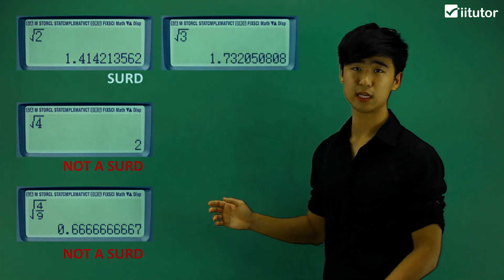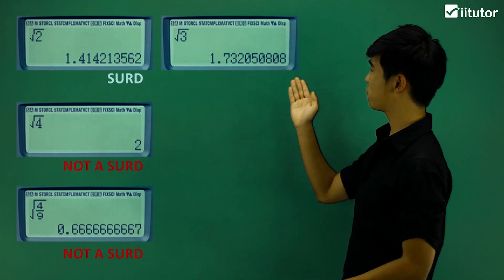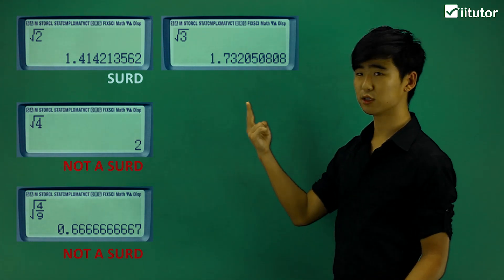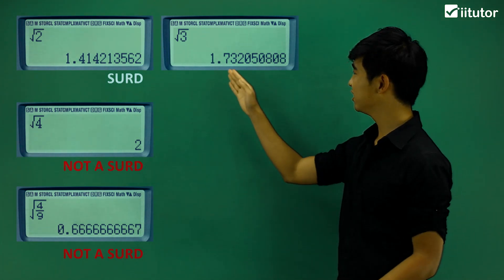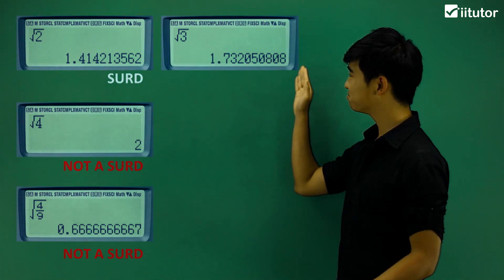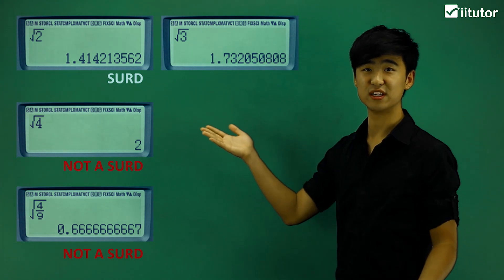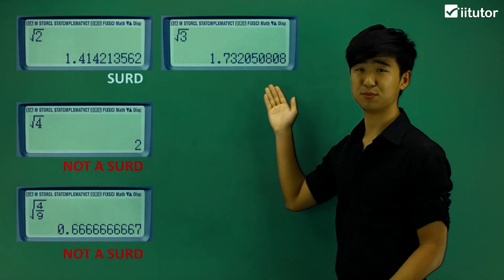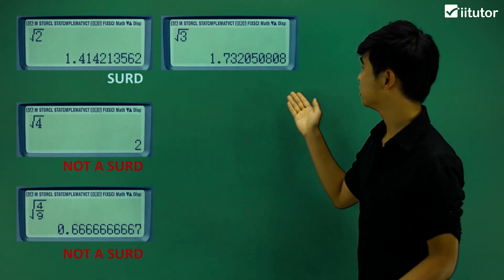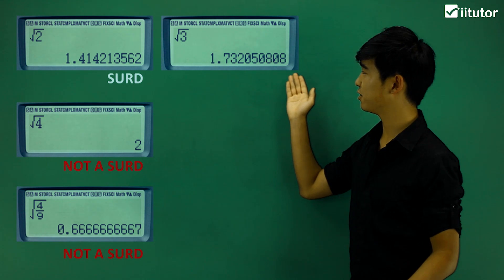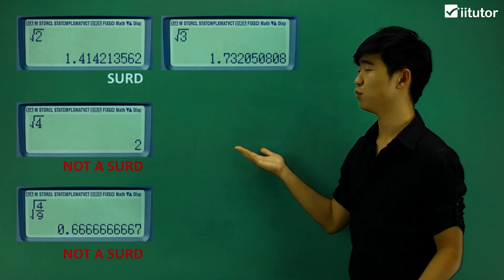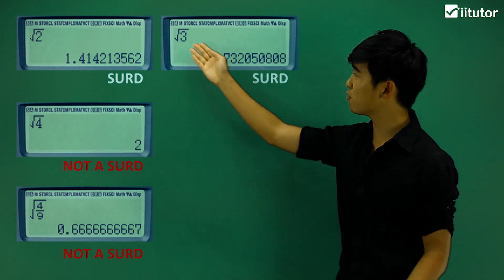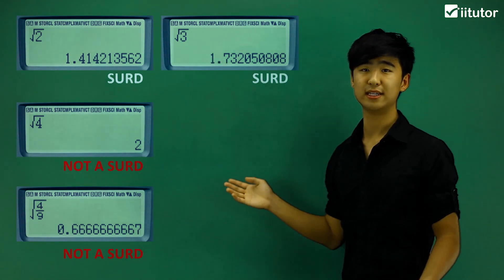We have the square root of 3. Let's have a look at our two conditions again. Is it endless? Yeah, it looks pretty endless to me. And it doesn't really have a specific pattern — it's just a bunch of random numbers. So we call this a third. The square root of 3 is a third.